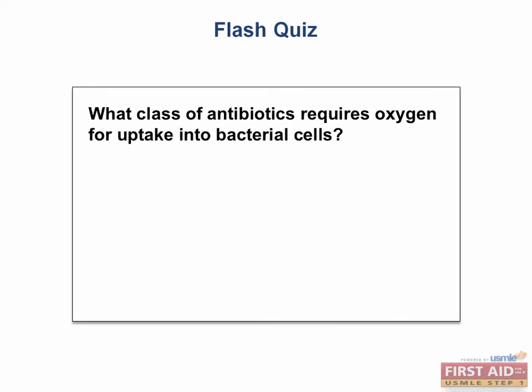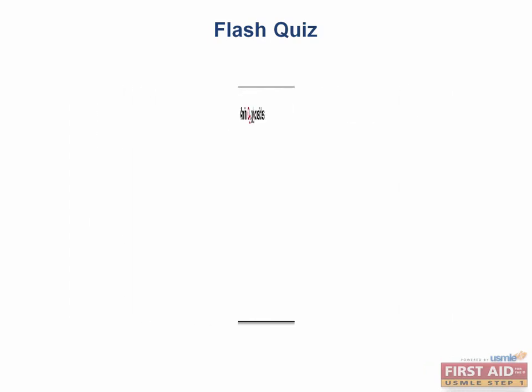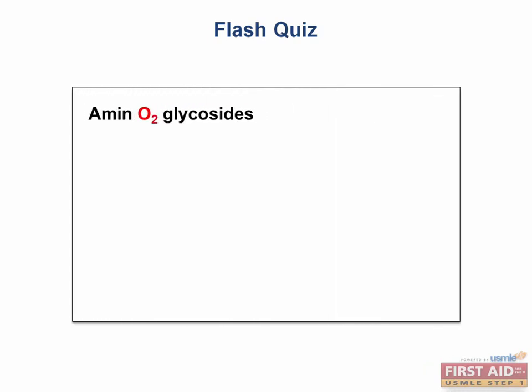Flash quiz: What class of antibiotics requires oxygen for uptake into bacterial cells? Those are the aminoglycosides. The aminoglycosides require oxygen and therefore are ineffective against anaerobic bacteria.